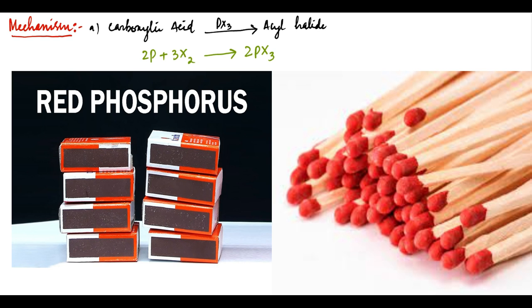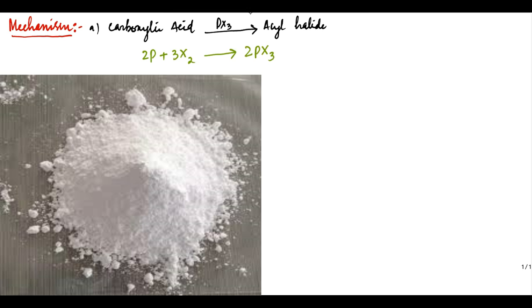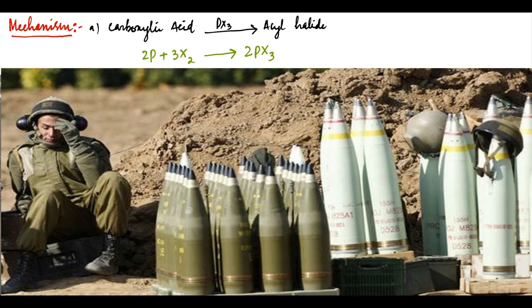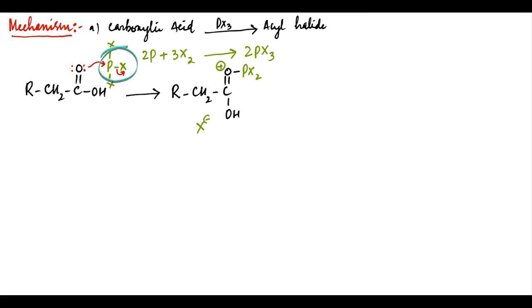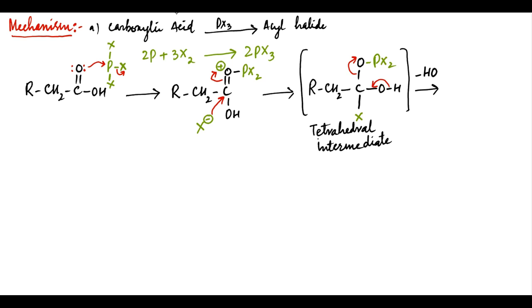Another allotrope of phosphorus, white phosphorus, needs no provocation to spontaneously combust in air and is often used in munitions. When treated with carboxylic acid, the carbonyl oxygen interacts with PX3 so that a halide ion is eliminated and a P-O bond is formed. The driving force is formation of a stronger P-O bond at the cost of a comparatively weaker P-X bond. The halide anion then attacks the electrophilic carbon so that the positive charge on oxygen is balanced, forming a tetrahedral intermediate. This intermediate reforms a P-O bond and loses a molecule of HOPX2 to form acyl halide.